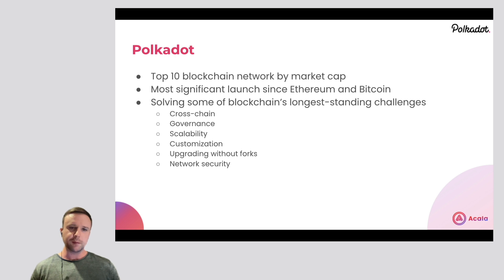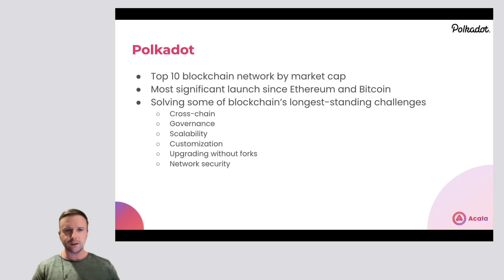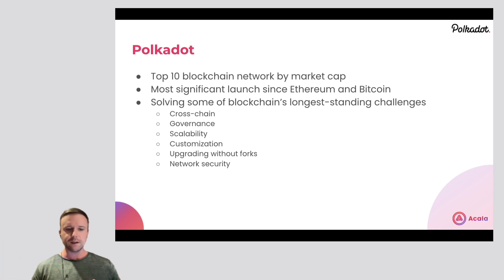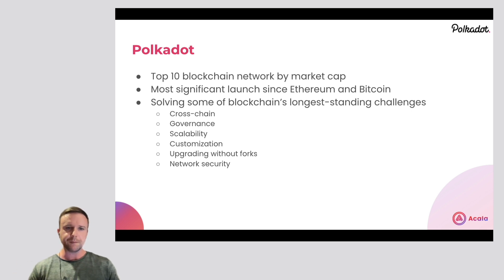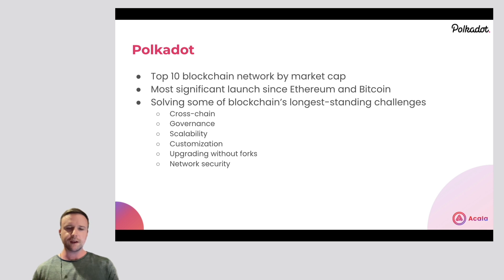Many believe this is the most significant launch since Ethereum and Bitcoin — the third chapter in crypto history — and it's solving many of blockchain's longest standing problems. So cross-chain, as I mentioned, the ability to do governance on the blockchain instead of often in a private room, the ability to scale instead of reaching huge gas prices and making it difficult to scale an application with many users. And customization of blockchain — many of these blockchains we call parachains are customizing for specific use cases or applications, like Acala building specifically for DeFi.